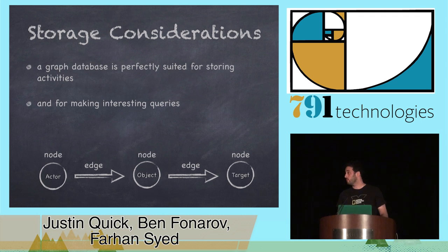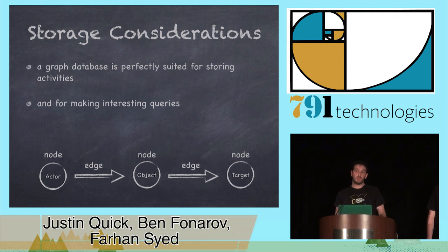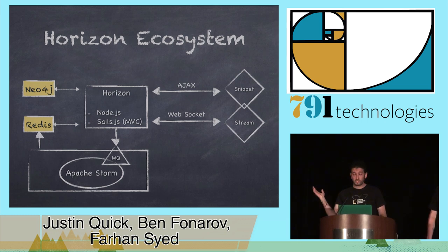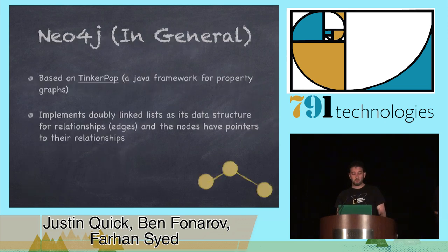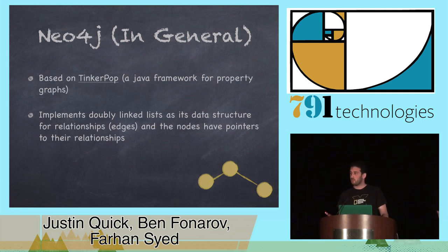For storage considerations, a graph database is perfectly suited for these types of things and for making interesting queries. It's optimized for large traversals and really good at storing relationships. We can look at individual slices based on different things. Neo4j was the product we chose — we looked at others but eventually chose Neo4j. It's based on TinkerPop, which is a Java framework for property graphs. Titan, another graph database, also uses the same thing. A property graph is a graph database that allows you to have properties on both nodes and edges. Underneath the hood, it implements a doubly linked list as its data structure for relationships, and nodes are just pointers to their first relationship.